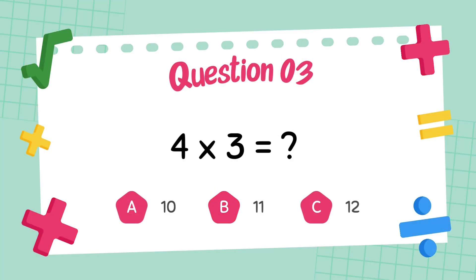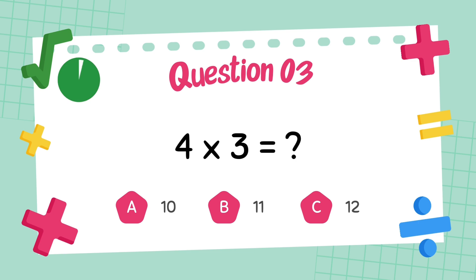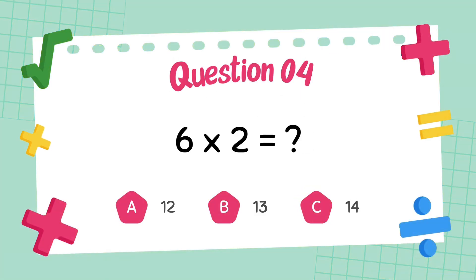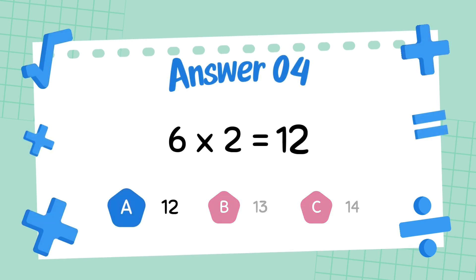What is 4 multiply 3? The answer is 12. What is 6 multiply 2? The answer is 12.